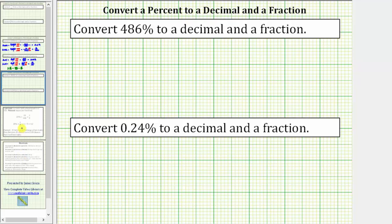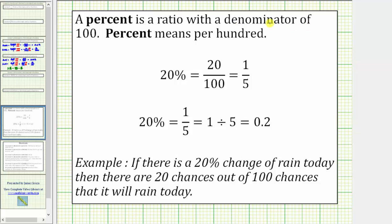We can define a percent as a ratio with a denominator of 100. Notice 20% equals the fraction 20 hundredths with a ratio of 20 to 100.